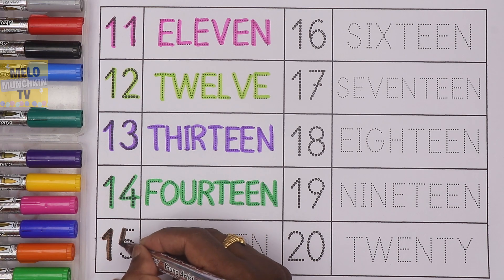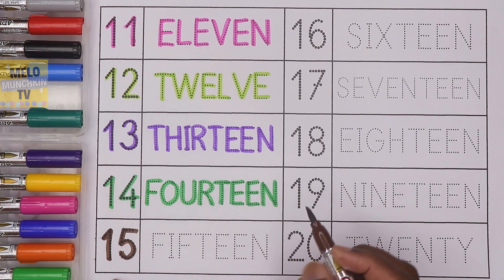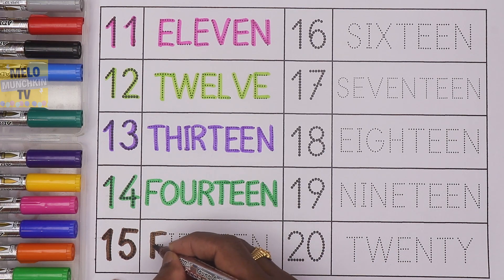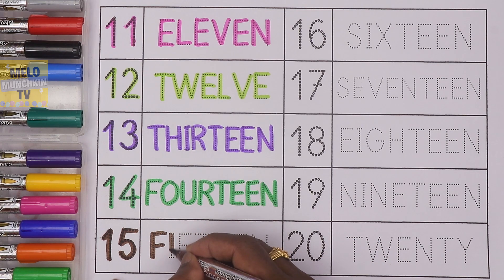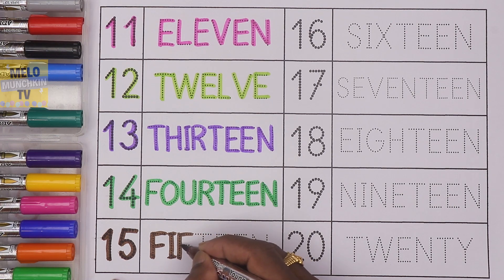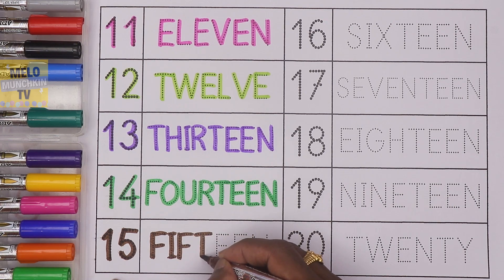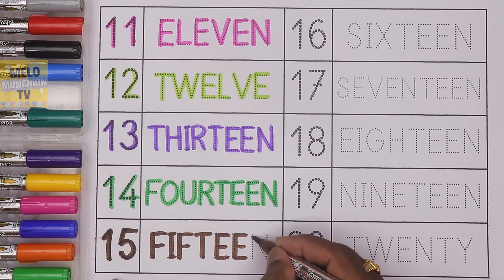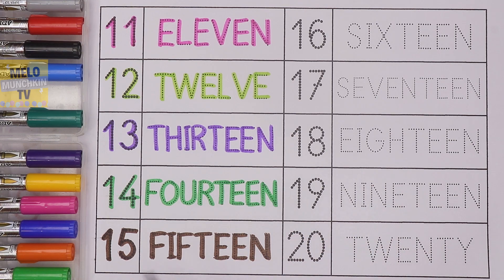Next I'll take brown color to write the number 15. 1, 5, 15. And the spelling is F I F T E E N. 15, 1, 5, 15.